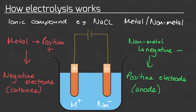For example, with a positive and negative electrode labelled as the anode and cathode, the metal is shown as the M+ ion and the non-metal as the Nm- ion. The positive metal ion would move to the negative electrode, the cathode. The negative non-metal ion would move to the positive electrode, the anode.